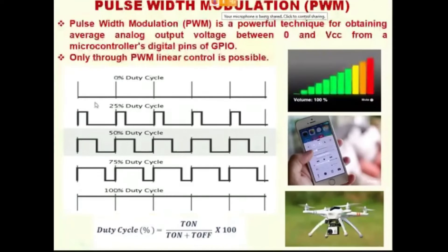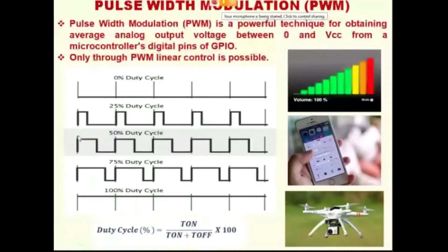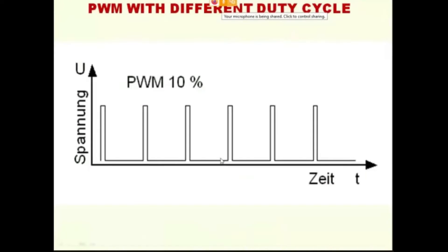As you all know, pulse width modulation is represented with the duty cycle. So the first row is 0% duty cycle, then 25% duty cycle, 50% duty cycle, 70% duty cycle. The frequency remains the same and the width is changing — that is why it is called pulse width modulation.